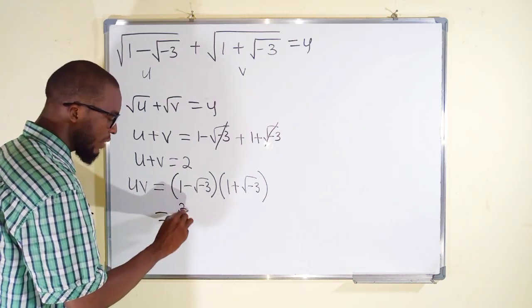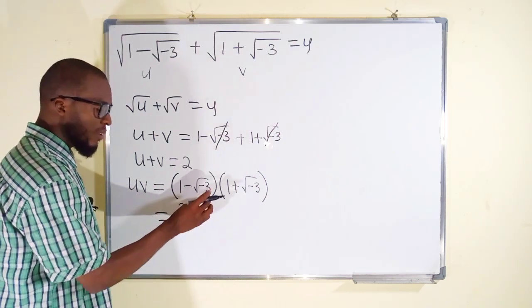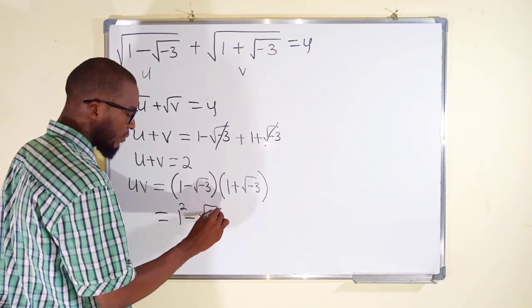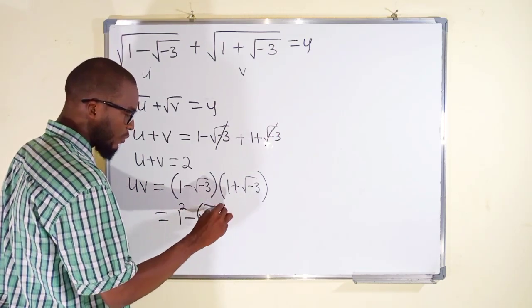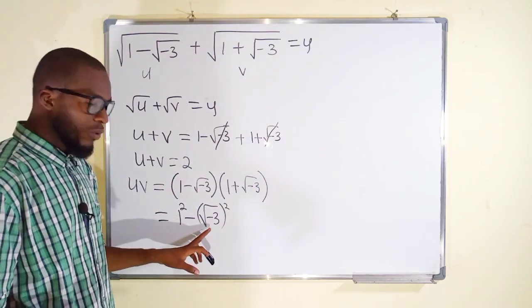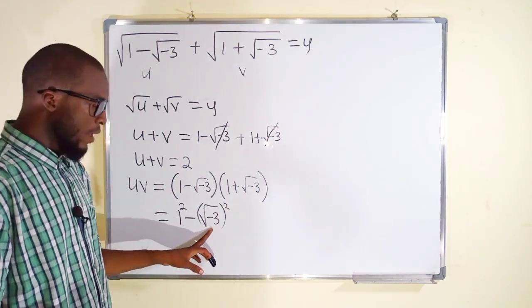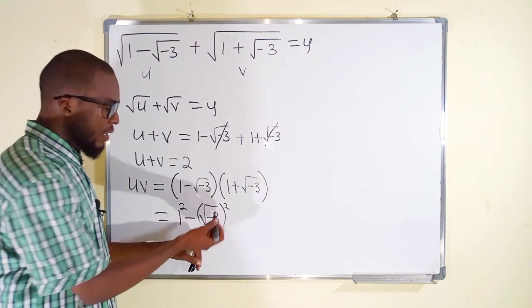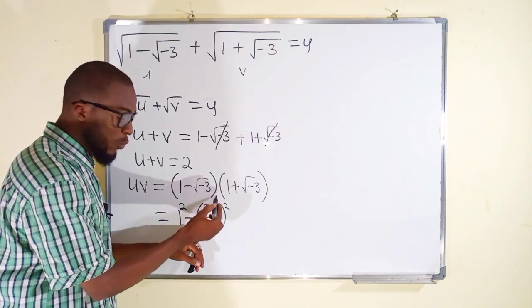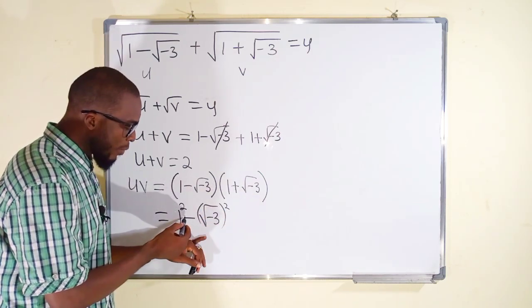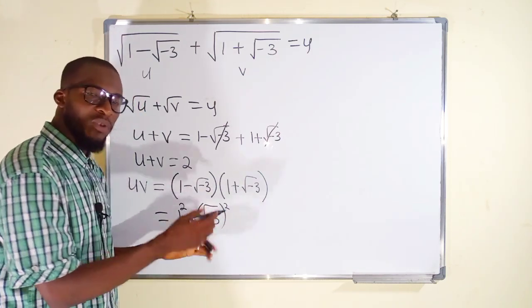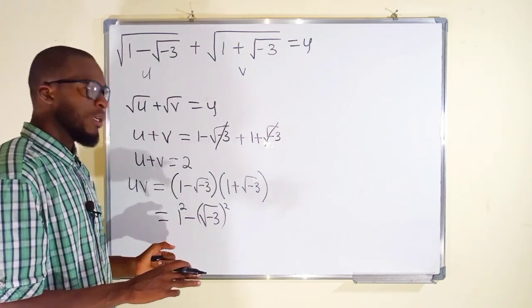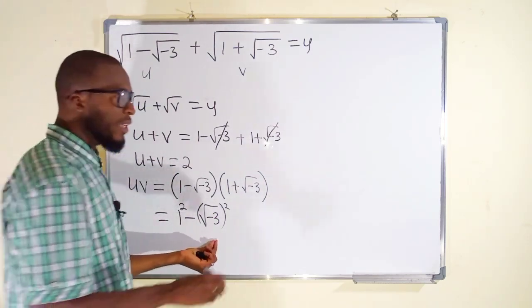So we are going to square this as well. But √(-3) is imaginary, so there are two possible ways for you to simplify this. If you cancel square root with a power of 2, we end up having minus minus 3 which is going to make it positive. 1 + 3 is equal to 4.